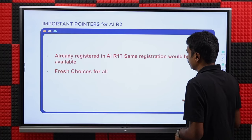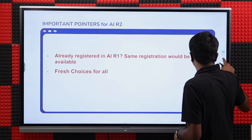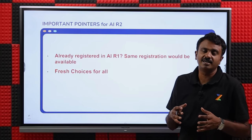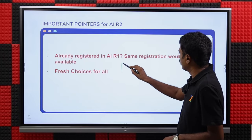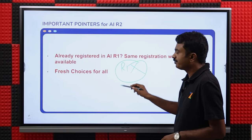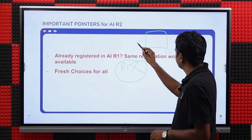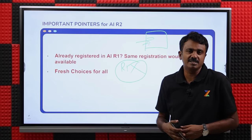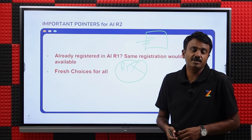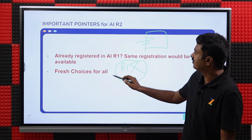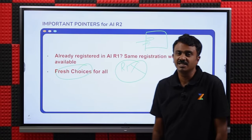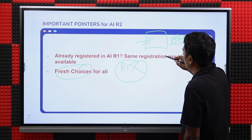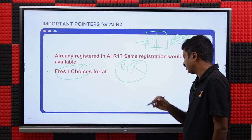Fresh choices for all — everybody fills fresh choices. Round 1 choices will be null and void; they will not even be there. You will start with a blank choice list and fill fresh choices, whether you opted for upgradation or not, took free exit, did not join, or were not allotted. If you put in 1000 choices earlier in Round 1, all are null and void — those 1000 choices have to be listed again from scratch.